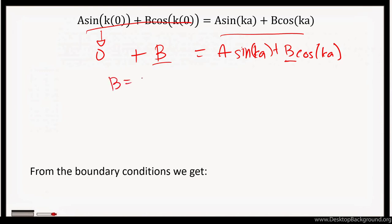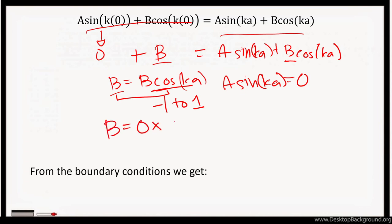So B cos(kx) and A sin(kx) terms can be separated. We know that cosine can assume values from -1 to 1. So for the left side and the right side to be equal, B should be equal to 0, since 0 times any value from -1 to 1 is equal to 0. So we get that B equals 0 and A sin(ka) equals 0.